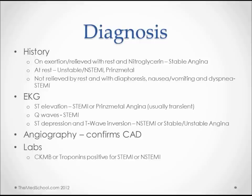The EKG is probably going to be the first tool we use if we're suspecting an MI. ST elevation is going to be seen with STEMIs and with Prinzmetal's angina. Prinzmetal's angina is sometimes hard to tell apart from STEMIs, but it's usually more transient and you're not going to have any Q waves or elevated troponin levels. Q waves are associated just with STEMIs. ST depression and T wave inversion can be seen with STEMIs or stable/unstable angina.